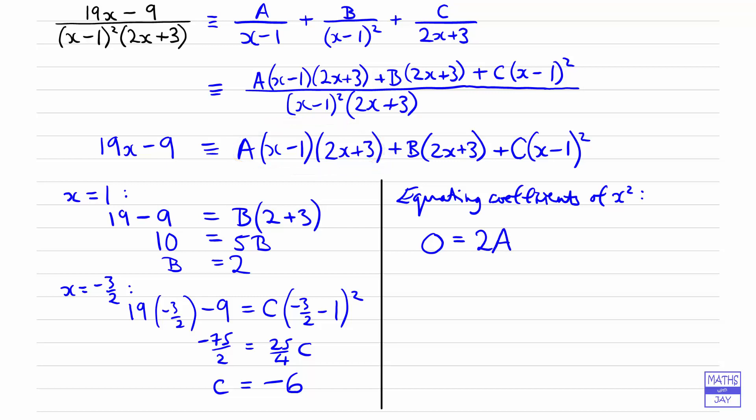And then B, well, that's not multiplying an x squared at all. We've only got 2x plus 3 there. So that's dealt with that. And C, when we multiply out x minus 1 all squared, we're going to get 1x squared in there, apart from the other terms. So simply by looking at what's multiplying x squared, we just get 0 is 2A plus C. And we've just found what C is. So that's 2A minus 6. So 2A is 6. And A is 3.